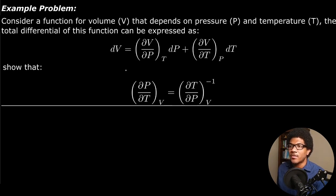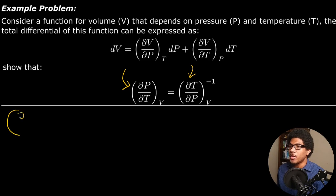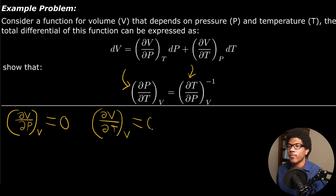The point of this problem is that we need explicit expressions for each partial derivative, and be able to show that if we invert one of them, those would be equal — thus proving the inverter in this general case. We're going to make use of two derivatives that we know would be equal to zero. If we differentiate DV/DP at constant volume, we know that's going to be equal to zero, because we're looking for a change in volume at constant volume. And also DV/DT at constant volume is going to equal zero as well.